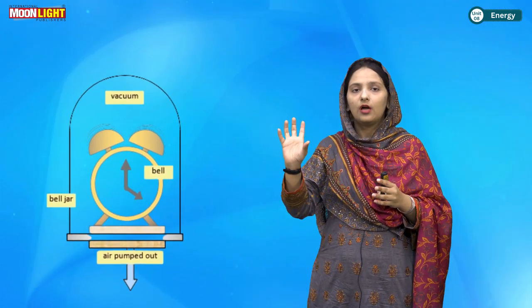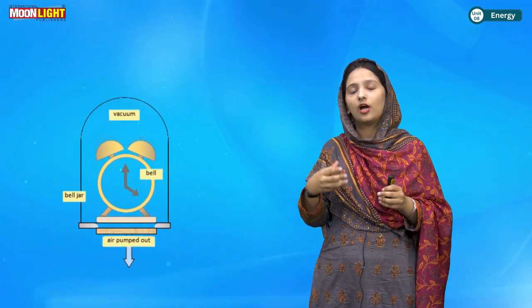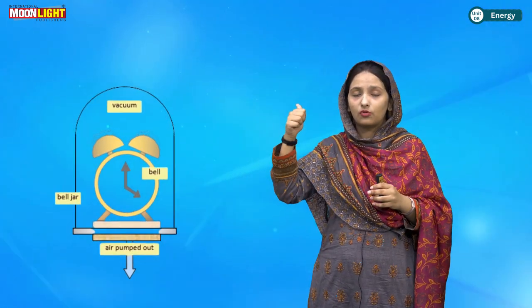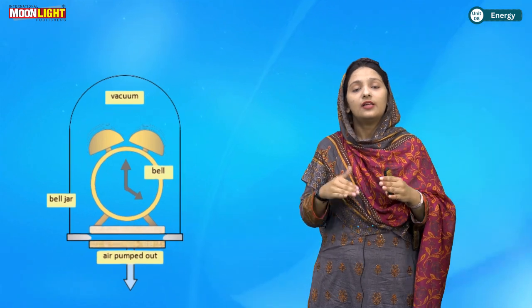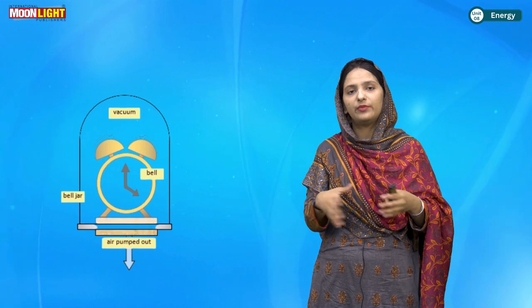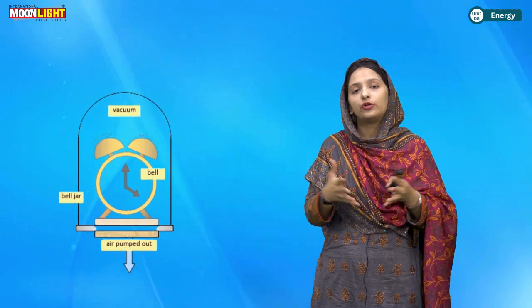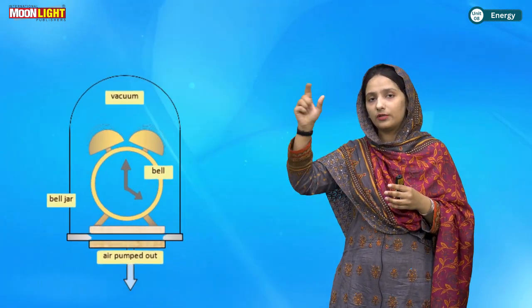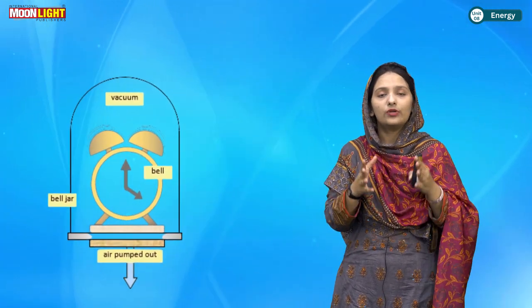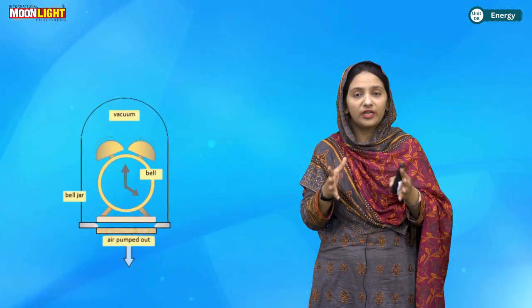Take a ball and a container, and remove the air from the inside. When you remove the air, there will be no medium. When you press the button on, the bell will not produce any sound. There will be no sound from inside — it is a vacuum with no liquid, no solid, no medium, no material inside. But when you release air back in, sound will be produced again. So a medium is needed for sound energy to travel.